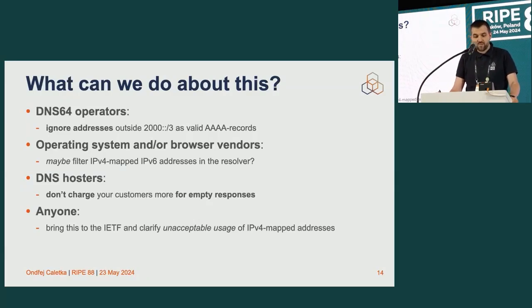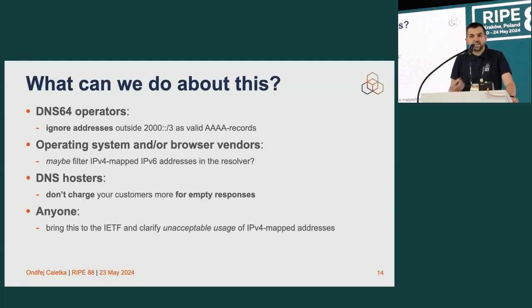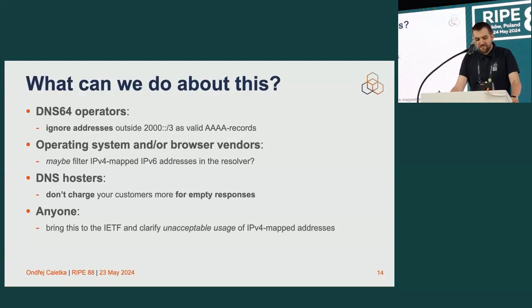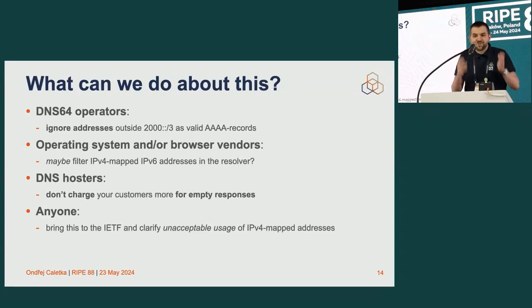What can we do about this? If you are a DNS64 operator, you should set your DNS64 to ignore all AAAA records containing anything other than global unicast address space — it doesn't make sense to have anything else there. If you are an OS or browser vendor, think about filtering IPv4-mapped IPv6 addresses from DNS input or even from user input, since they only serve one purpose. If you're a DNS hoster, don't charge more for empty responses than for responses with data, because then people start doing weird things. And perhaps someone should bring this to the IETF, because apparently nobody wrote explicitly that you should not put an IPv4-mapped address into DNS — nobody thought anyone would be silly enough to do it.